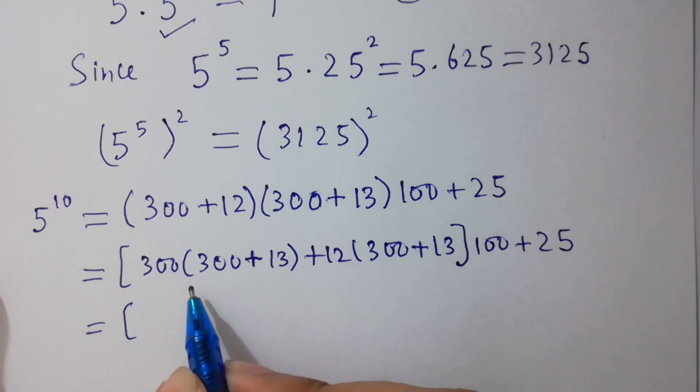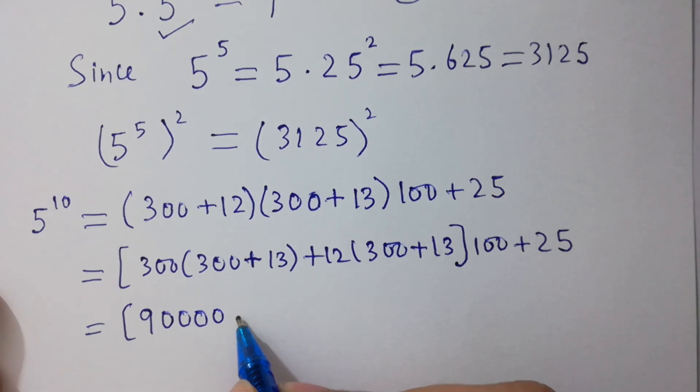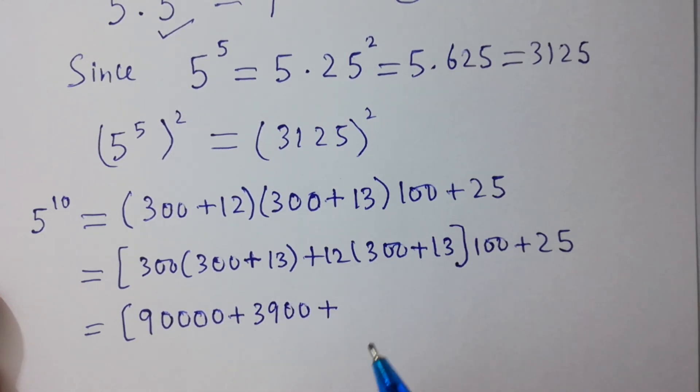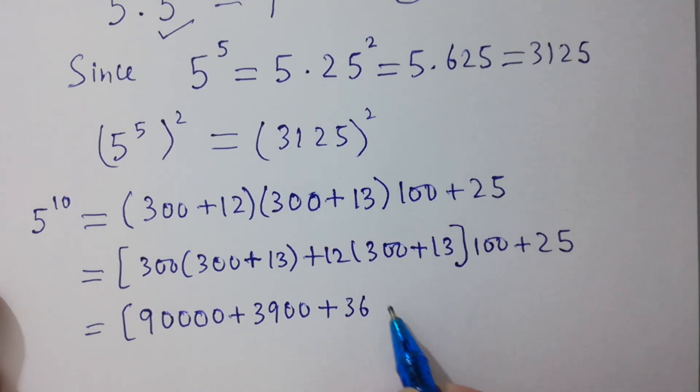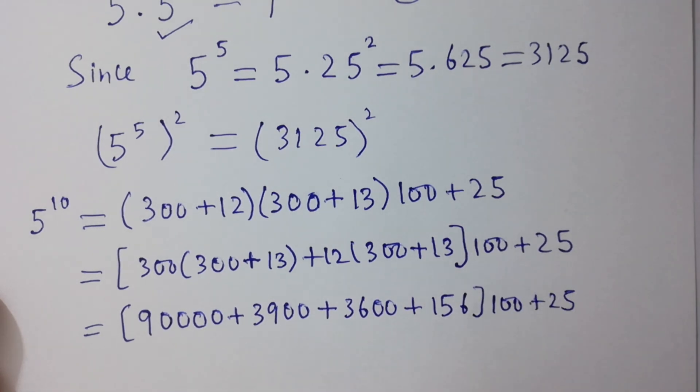300 times 3 is 90,000. 13 times 3 is 3900. 12 times 3 is 3600. 12 times 13 is 156, all times 100, plus 25 as it is.